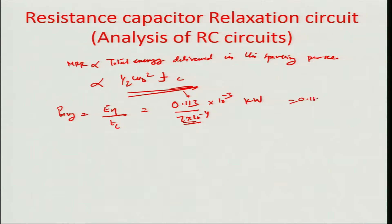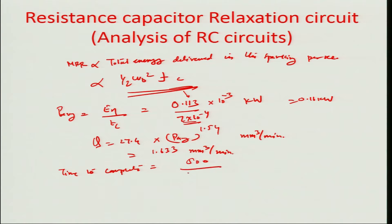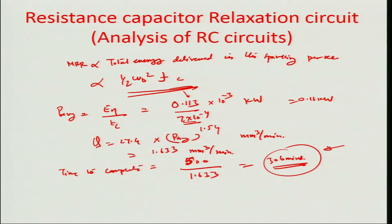Using the empirical relationship Q = 27.4 × W^1.54 with W = 0.16 kW, the MRR comes out to be approximately 1.633 mm³ per minute. The time to complete the drilling is then 500 mm³ ÷ 1.66 mm³/min ≈ 306 minutes. So a 5 mm thick plate of carbon steel takes about 306 minutes to drill through this EDM process.